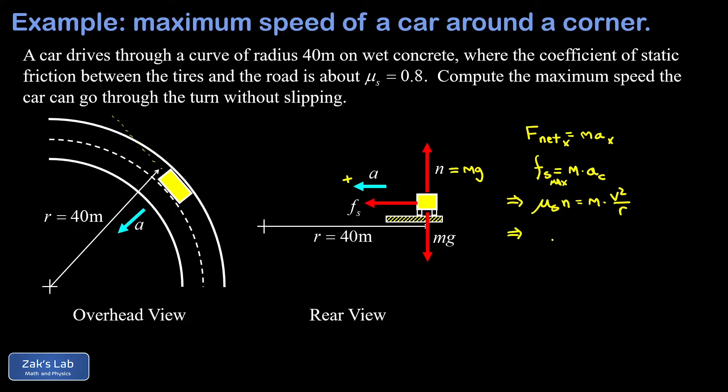Now all we have to do is sub in our normal force: μs mg equals m v squared over r. Something really nice happens here—the mass of the car cancels out, and highway engineers are thankful for this because this means that the safe speed for a turn doesn't depend on what car you're talking about.